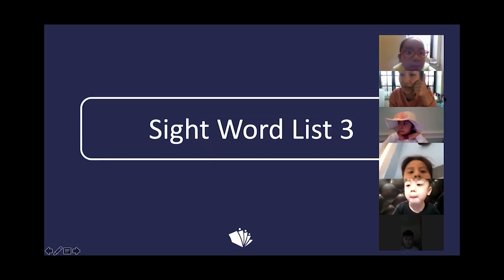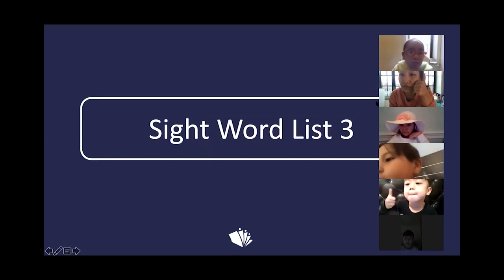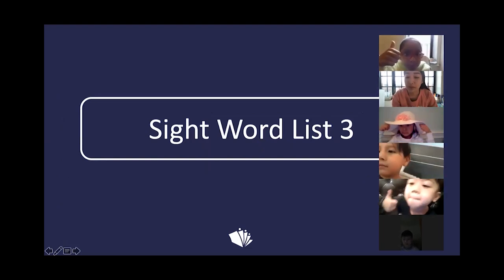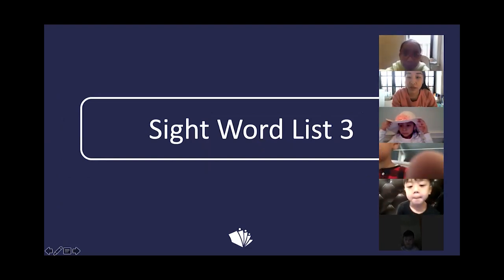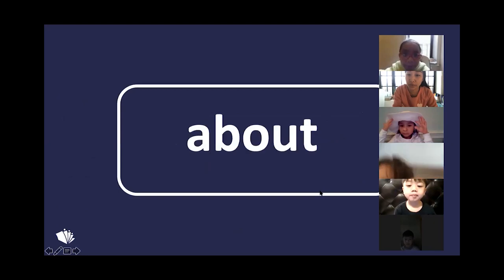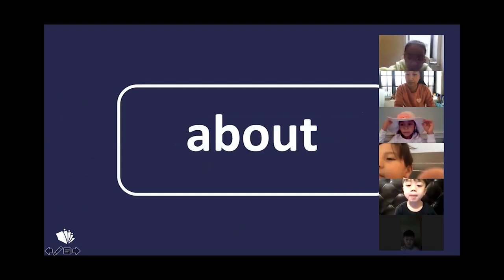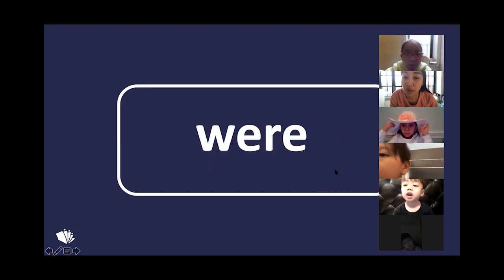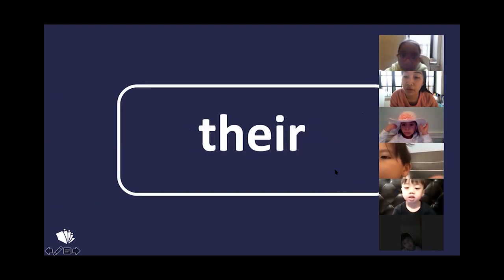Thumbs up when you're ready. Here we go. Sight word list three. Here we go. The word is? Good. Down. Were. There.